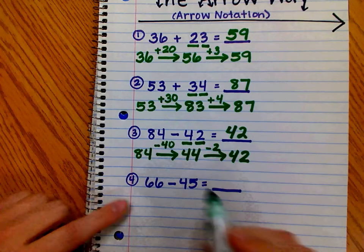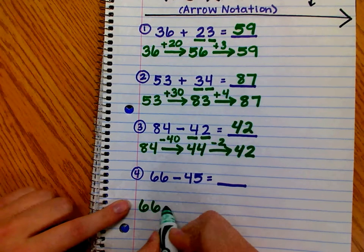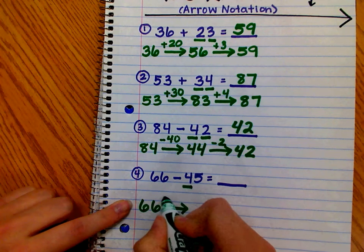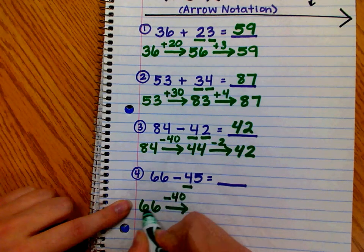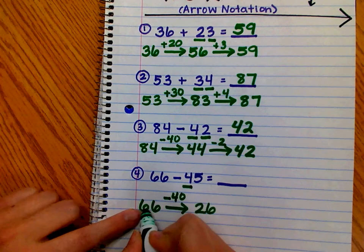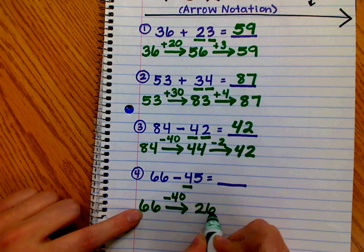66 minus 45. Again, we start with the first number. We draw our arrow, and we subtract the tens. 4 tens is equal to 40. So, 66 minus 40 is 26 because 6 tens minus 4 tens is 2 tens, and then we have our 6 ones.